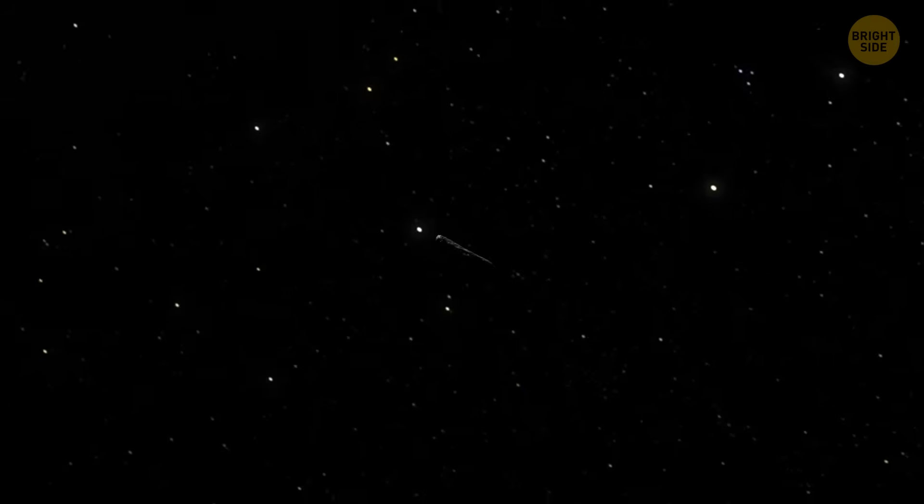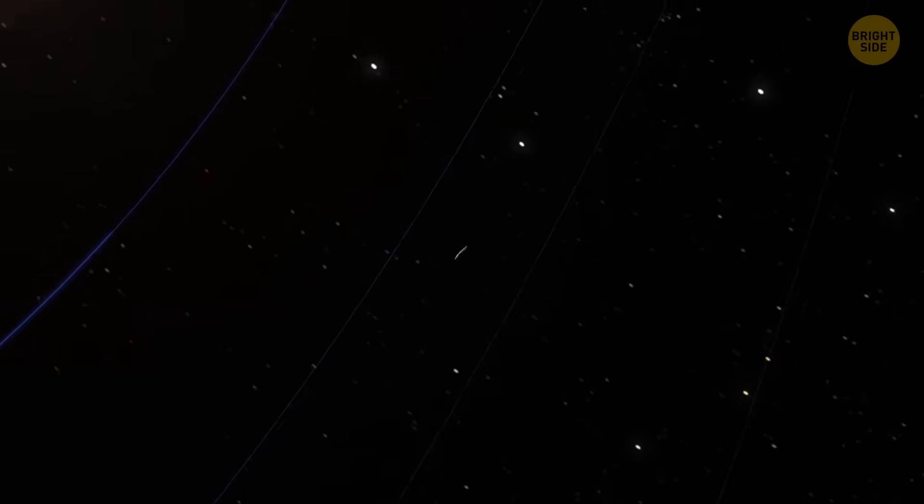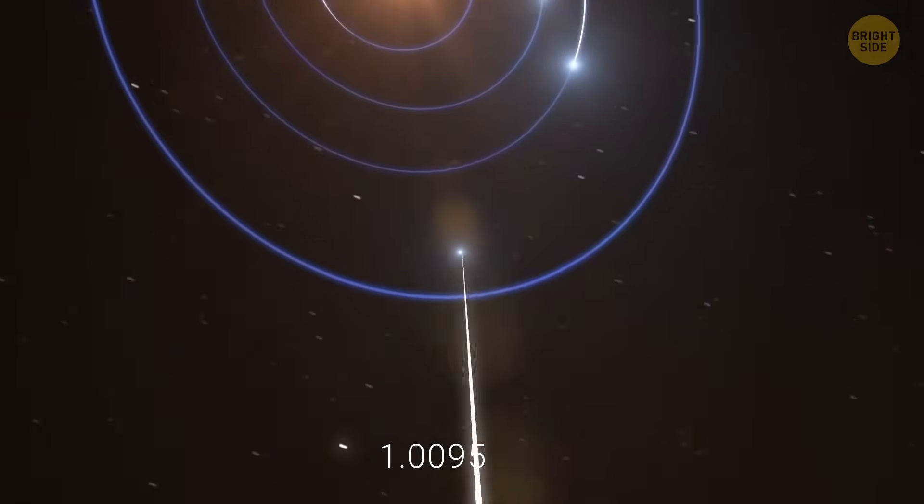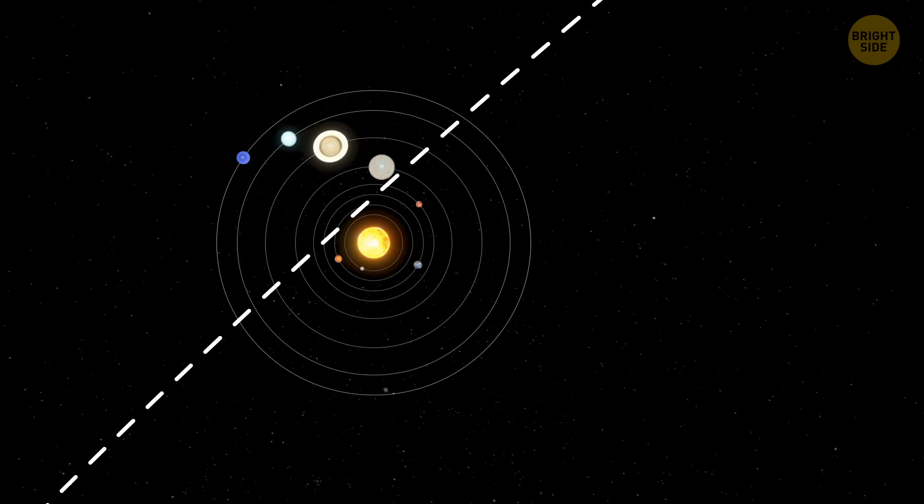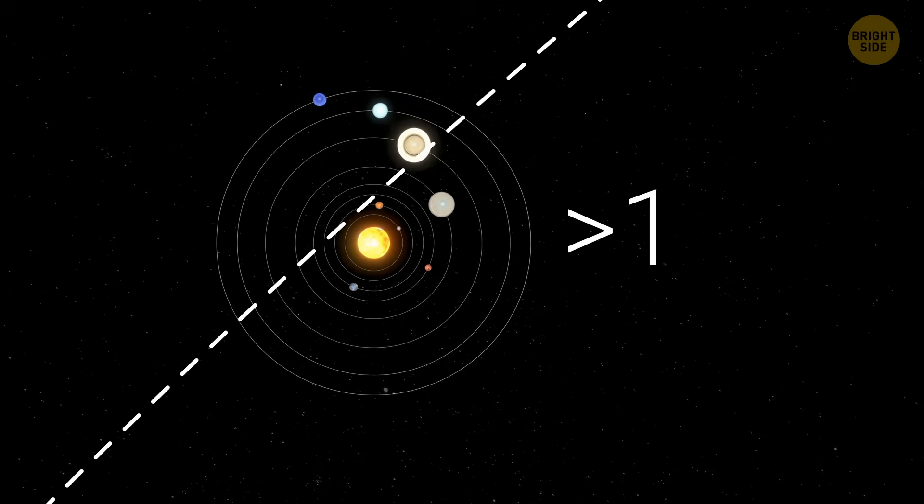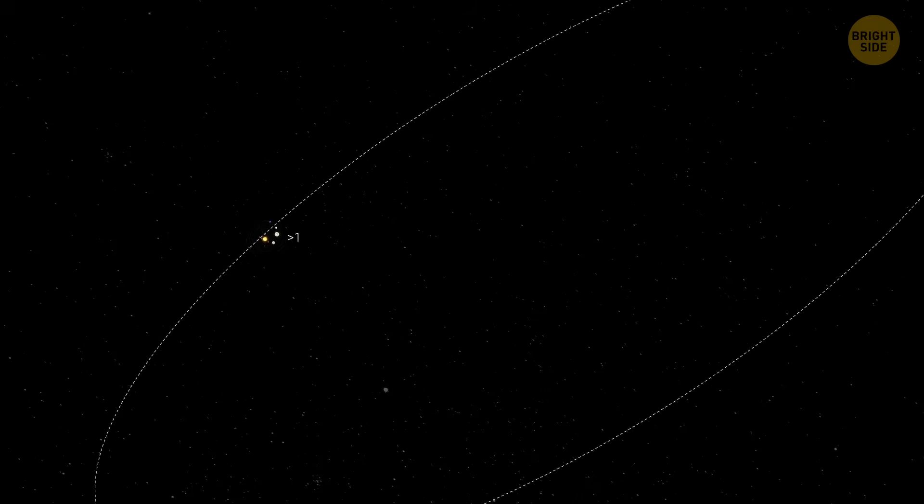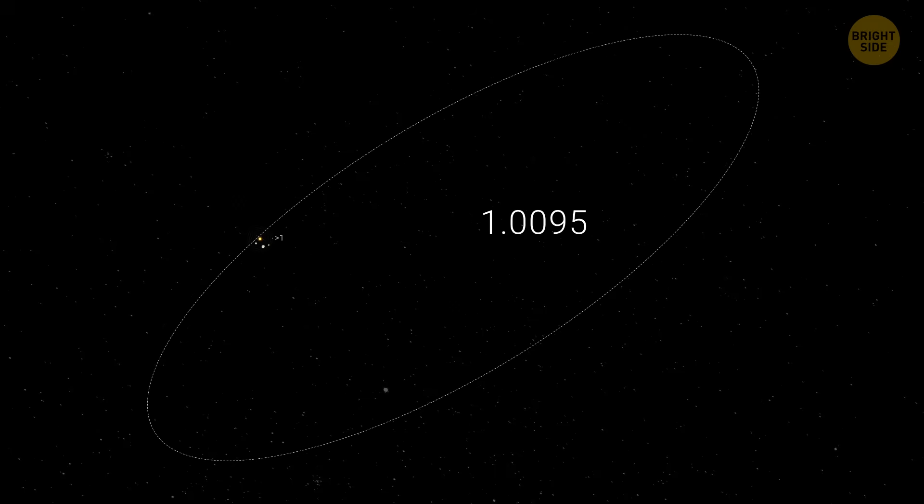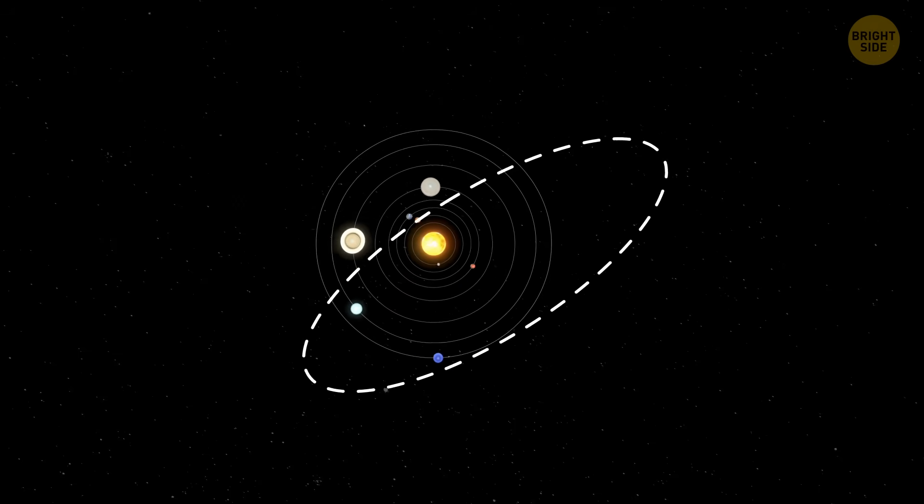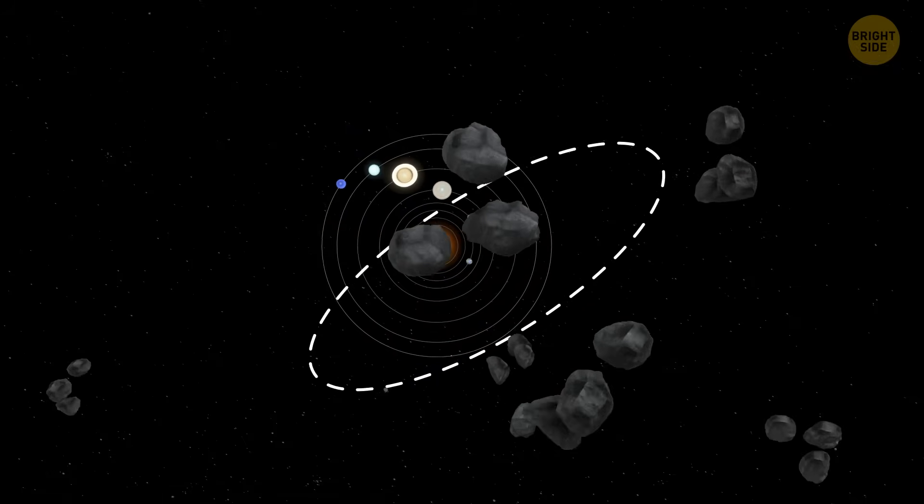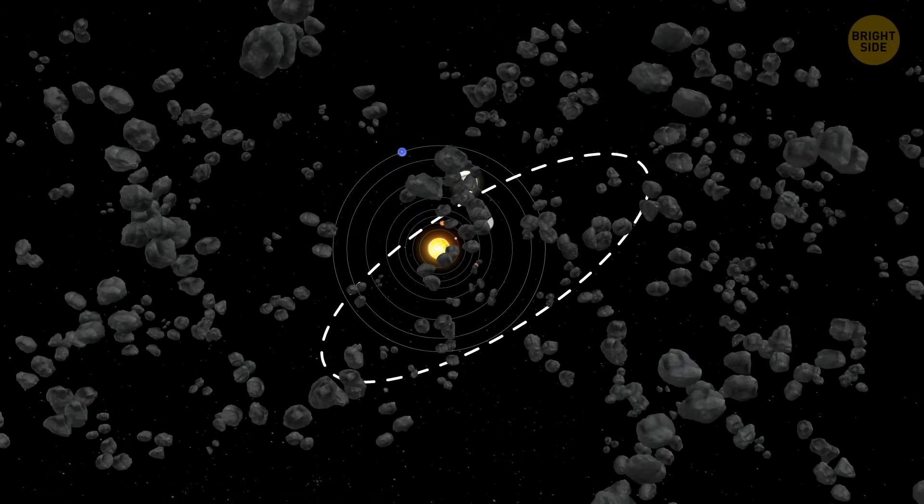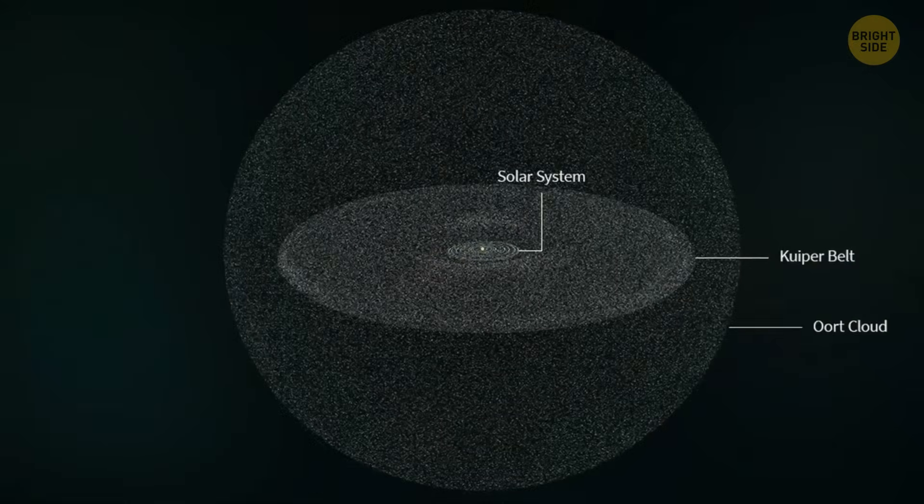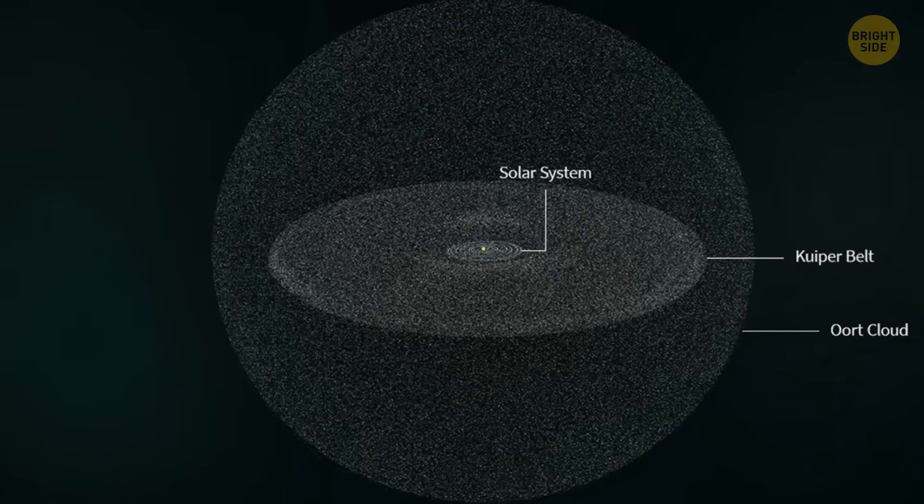Right now, its orbit has an eccentricity of 1.0095. And let me break it down in human language. If that number was well above 1, it would mean the object definitely came from outside the solar system. But because it's only just a bit above 1, the most likely explanation is that C-2025 V1 came from the Oort cloud. That's a giant, faraway shell of icy objects that surrounds the solar system.